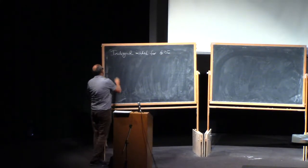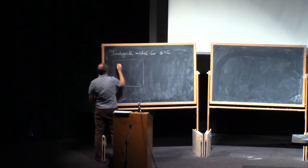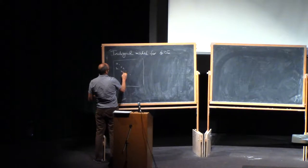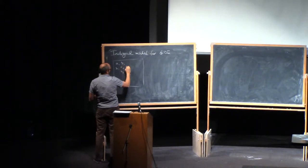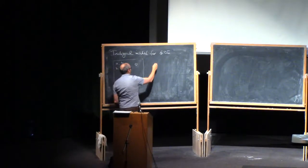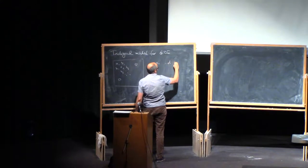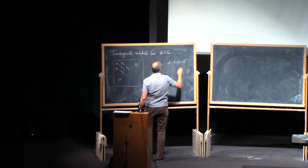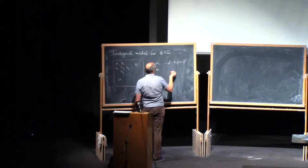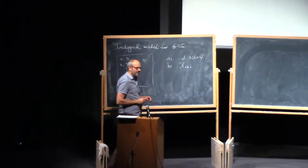It was a Jacobi matrix of the form A1, A2, and so on, B1, B2, and zeros here. The AIs were IID normal zero two, and the BI were chi of n minus i. And all of these things were independent.